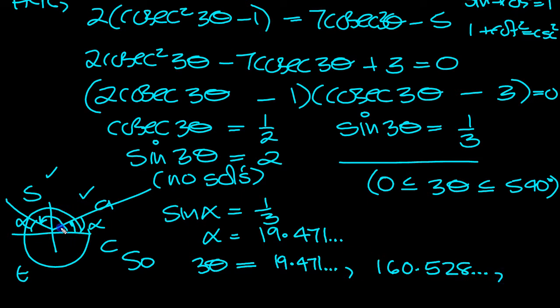And then there's another solution. If we go right round 360 and then to here, another 19.471, so that's 379.471. And then the other solution would be right round to 360, right round to 540. So 540 take 19 is 520.528. So there's our solution set.